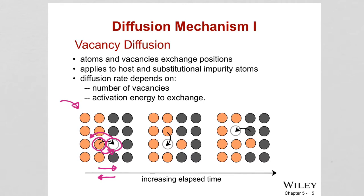Both self-diffusion and interdiffusion occur by the vacancy mechanism. In self-diffusion, pure atoms exchange positions with vacancies. For interdiffusion, the copper-nickel example shows this. The diffusion rate depends on the number of vacancies and the activation energy required to exchange position with the vacancy.